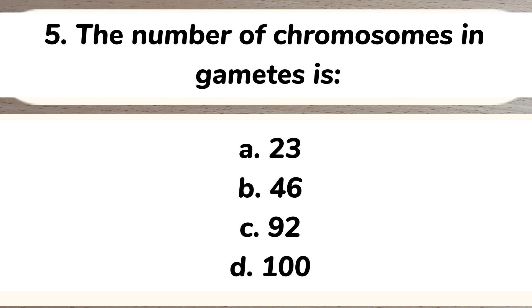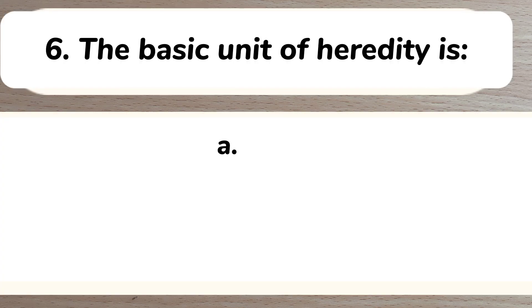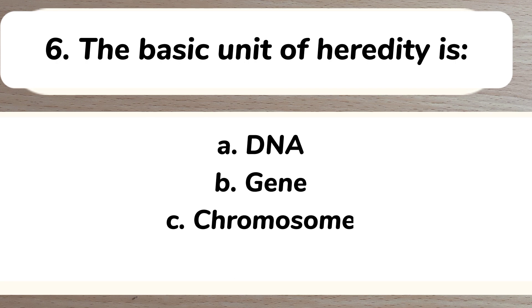Number five: the number of chromosomes in a gamete is A) 23, B) 46, C) 92, D) 100. Answer: A) 23. Number six: the basic unit of heredity is A) DNA, B) gene, C) chromosome, D) cell.